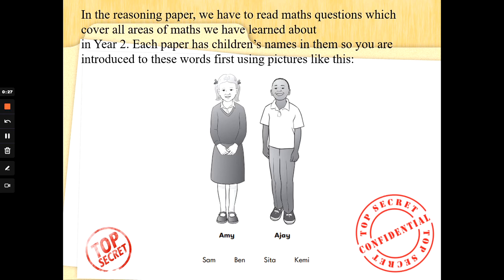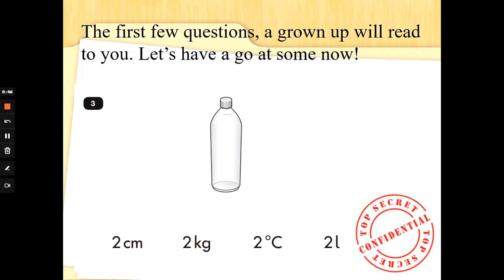In the reasoning paper we have to read maths questions which cover all areas of maths we've learned about in Year 2. Which is why for now, these videos are broken down into separate skills. I will be making mixed videos very soon. There are always some children's names in videos and there are pictures to accompany the names.